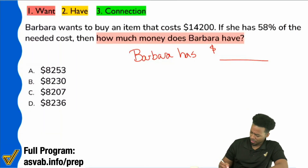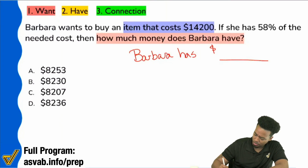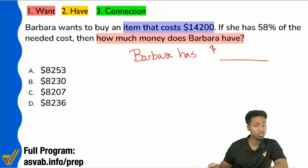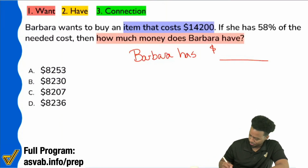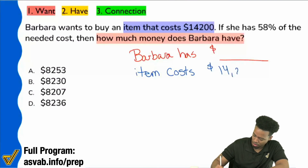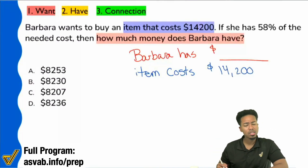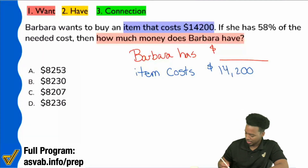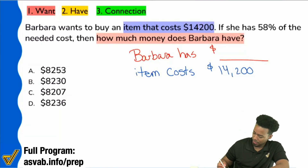Let's write that down. First thing I saw here was the item that costs $14,200. And number two: it says that she has 58% of the needed cost.